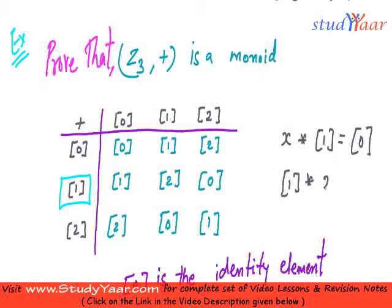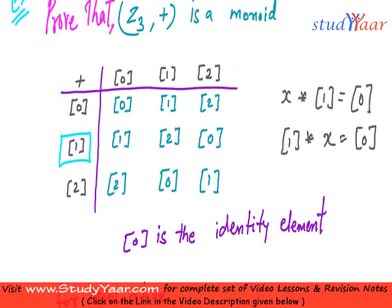Let us see if we have this. So we have 0 over here. So 1 star 2 is equal to 0, or 1 plus 2 is equal to 0 since we have the operation already defined as plus.